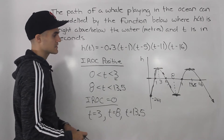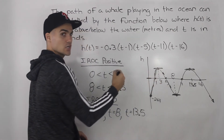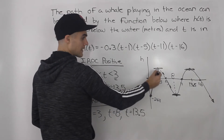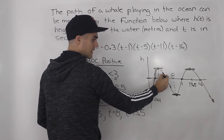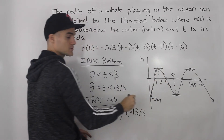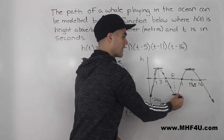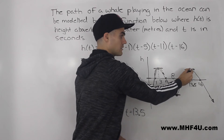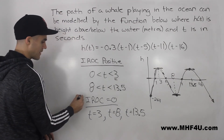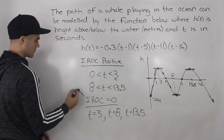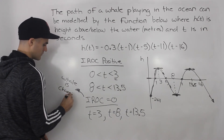Part c asks what is actually happening at those points. As you can see from the diagram, the whale is changing direction at each of those points. At t = 3, it reaches a maximum height above water and turns back down. At t = 8, it reaches a minimum and turns back up. At t = 13.5, it reaches another local maximum and turns back down again. So when the instantaneous rate of change is zero, the whale is changing direction.